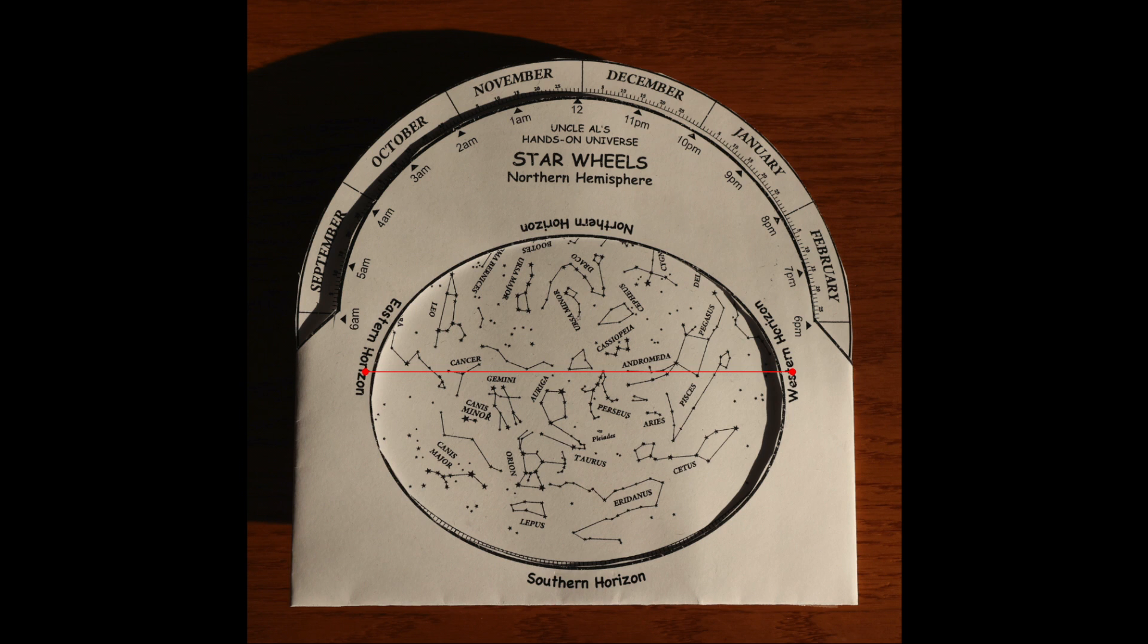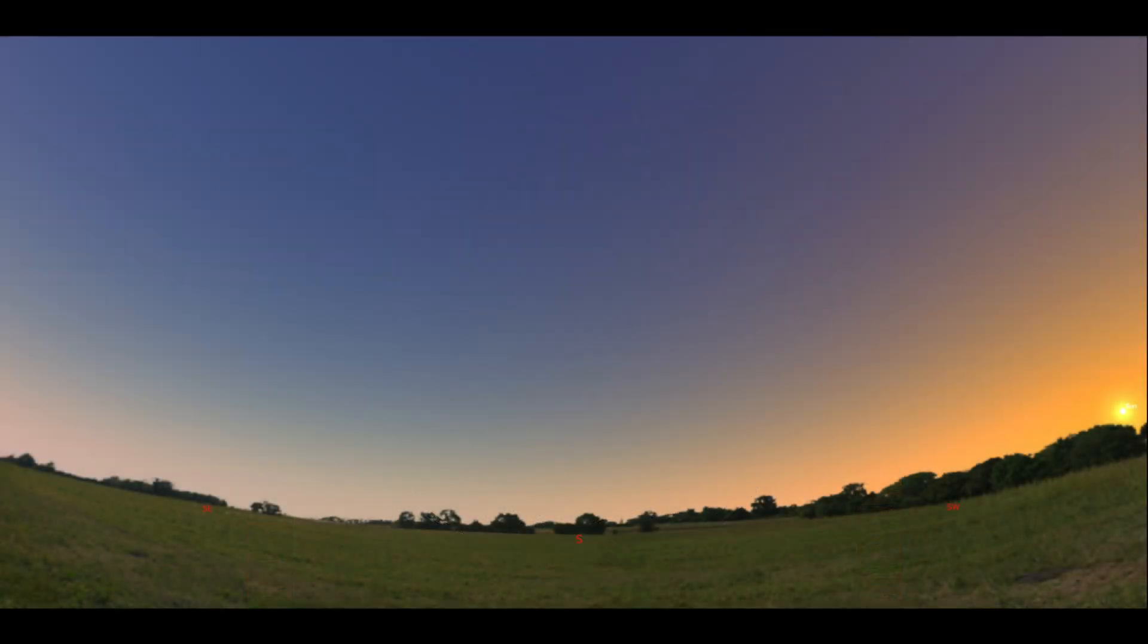But how do you know which way is south? Well that's pretty easy too. Go outside right before sunset and watch where the sun sets. Don't look at the sun, just watch where it sets. It sets in the west. So in order to face south, stand so that your right shoulder is pointing to where the sun set, and if you look straight ahead, you'll be looking to the south.